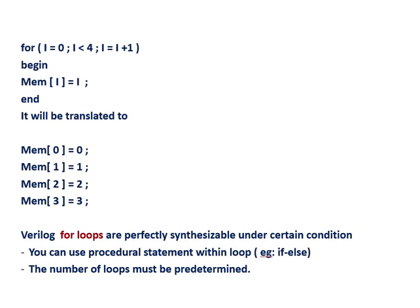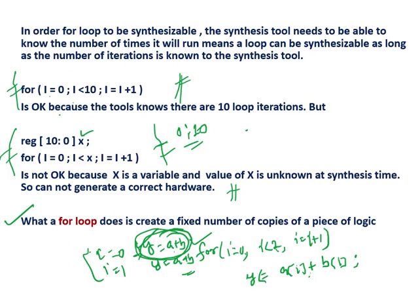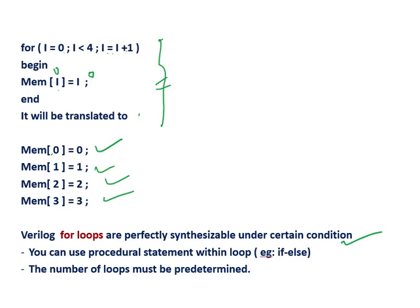For i equal to 0, i less than 4, i equal to i plus 1, begin: memory of i equal to i. What this means is: memory of 0 equal to 0, mem of 1 equal to 1, memory of 2 equal to 2, memory of 3 equal to 3 — because there is an increment of i each time. This is synthesizable, because the for loop is perfectly synthesizable under certain conditions — as long as the number of iterations is known to the synthesis tool. In this case, the tool knows it has to run 4 times — 4 iterations — so it will generate correct hardware.